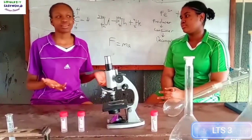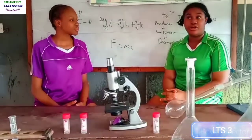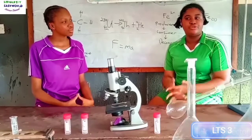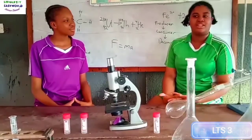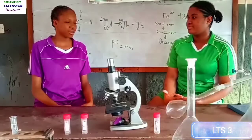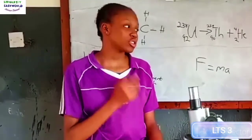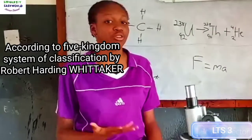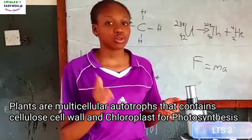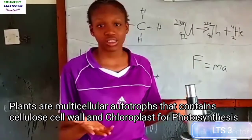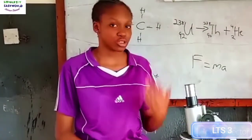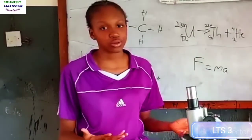So, what are plants? Plants are organisms that produce their own food through photosynthesis. According to the five-kingdom classifications of living organisms, plants are autotrophic multicellular organisms with cellulose in their cells, which allows them to convert sunlight through photosynthesis to produce their food.